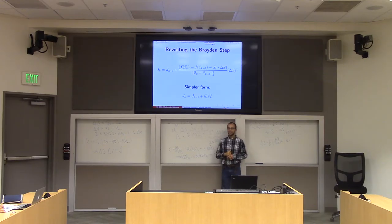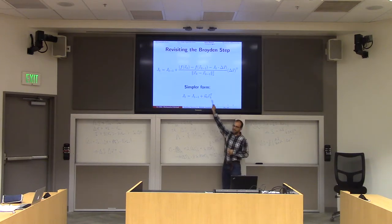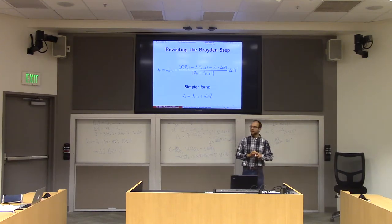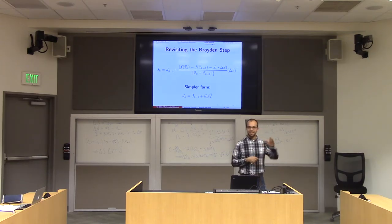The set of N×N matrices is way bigger than the set of matrices that can be written in this outer product form — just one vector times another vector. In fact, this thing can have rank at most one. It's a very simple update.